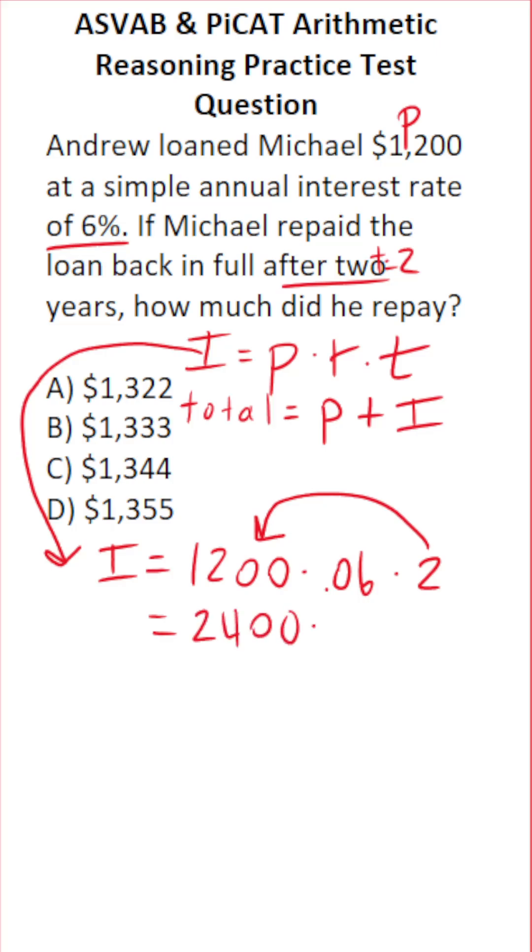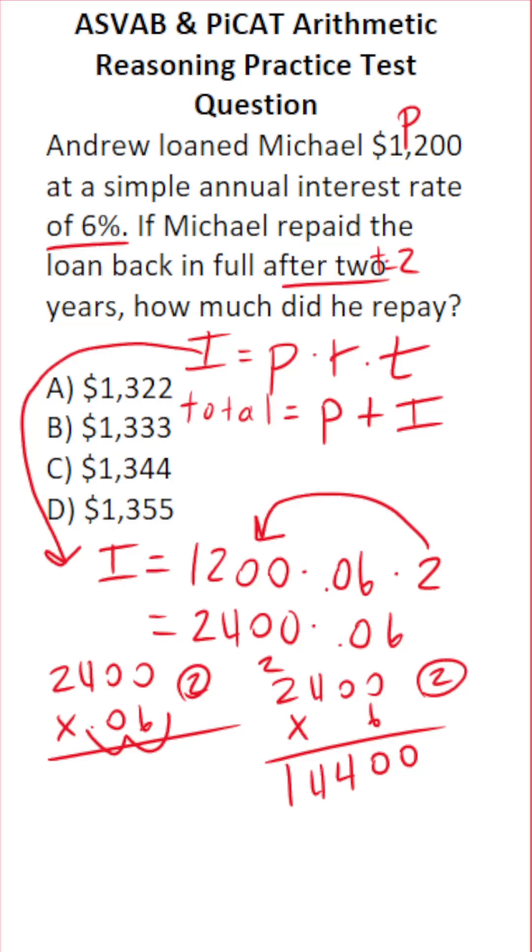So this is 2,400 times 0.06. I'll do this off to the side to avoid mistakes. We move the decimal two places to the right to make this 2,400 times 6, with two decimals to move back when done. 6 times 0 is 0, 6 times 0 is 0, 6 times 4 is 24—bring down 4, carry 2. 6 times 2 is 12, plus 2 is 14. Bring in our two decimals.